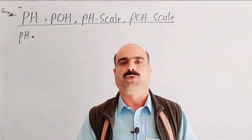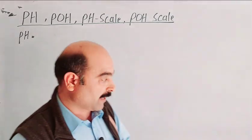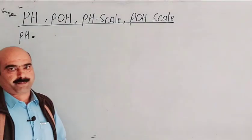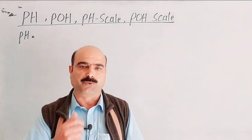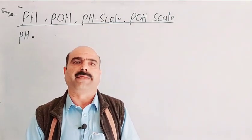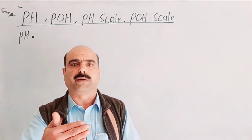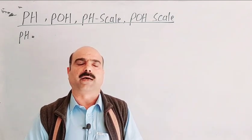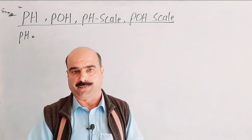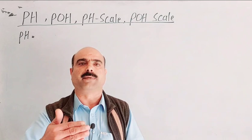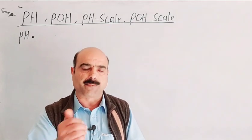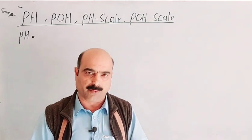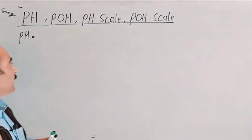This is an important and conceptual topic. Basically, pH and pOH are terms we use to measure the strength of acids and bases — whether an acid is strong or weak, whether a base is strong or weak. Using pH and pOH values, we can determine and compare acidic strength and basic strength.